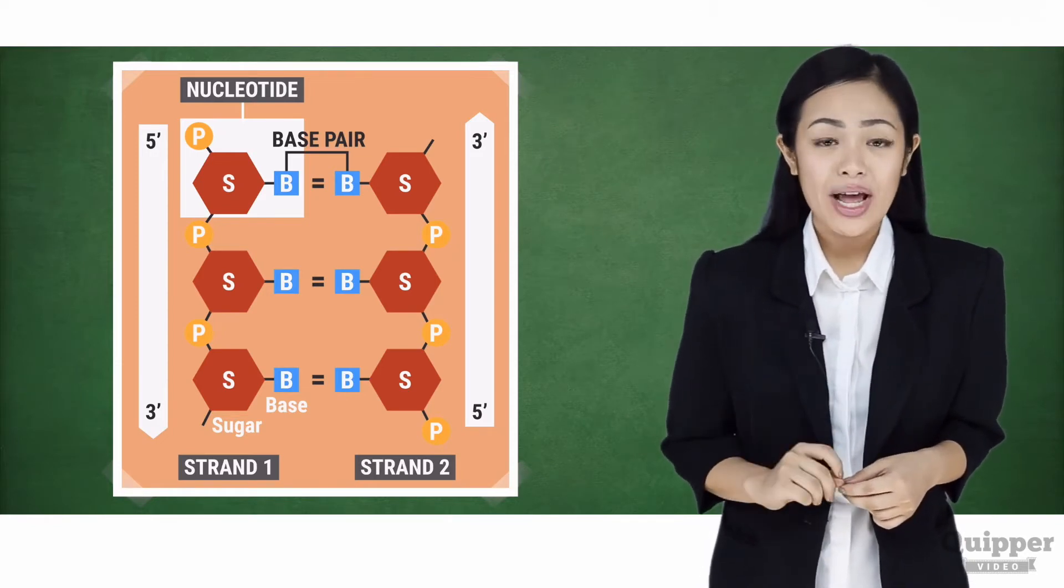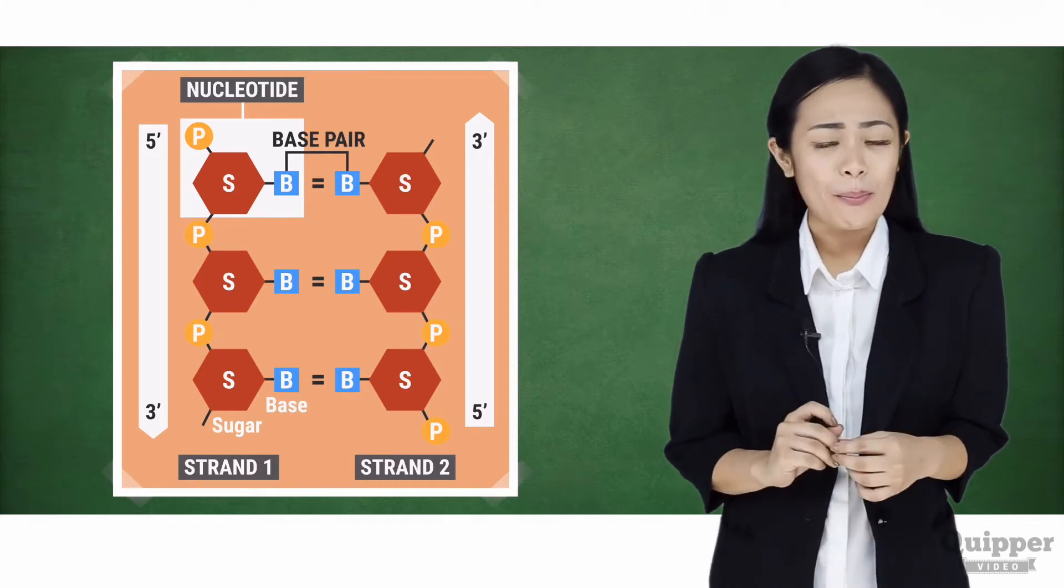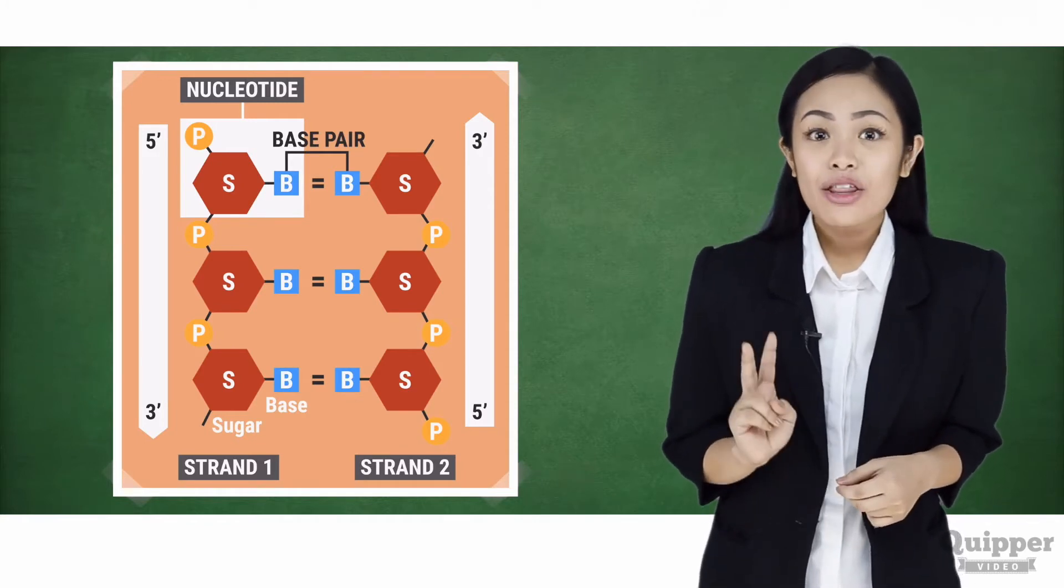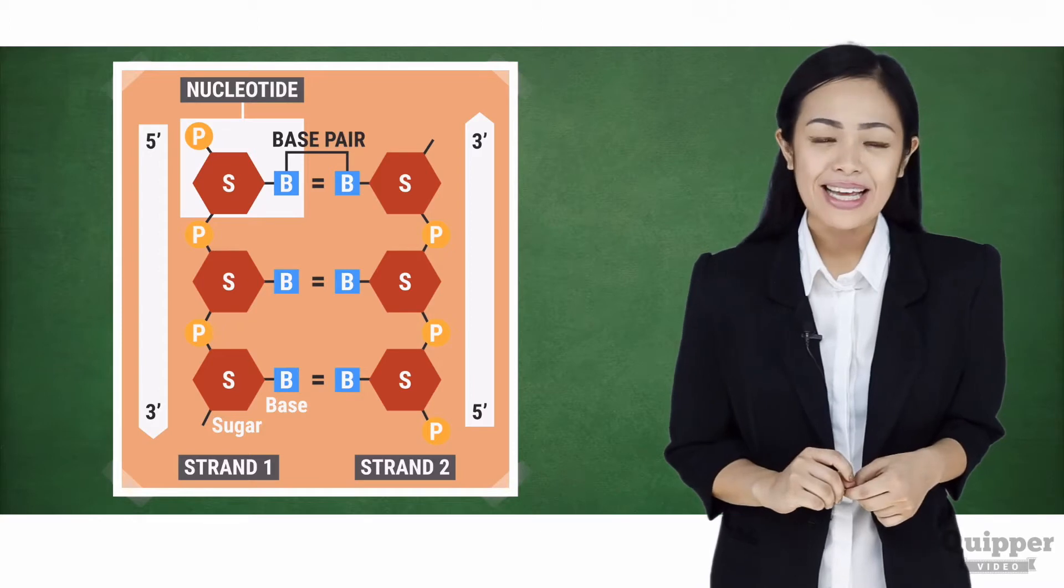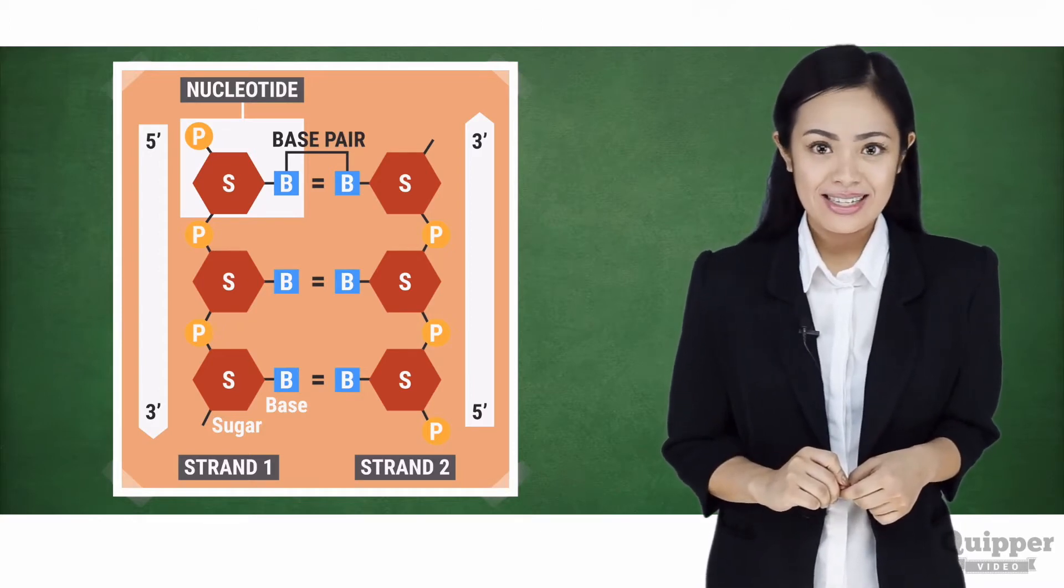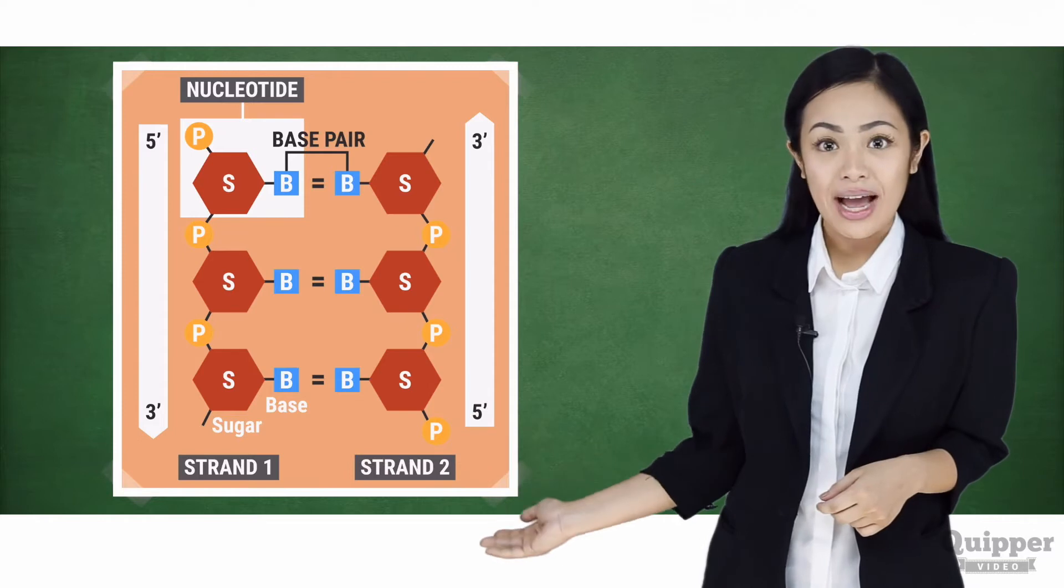Also, the two strands of a DNA run in opposite directions. The two strands are said to be anti-parallel. To show you this, notice that the first strand, from top to bottom,